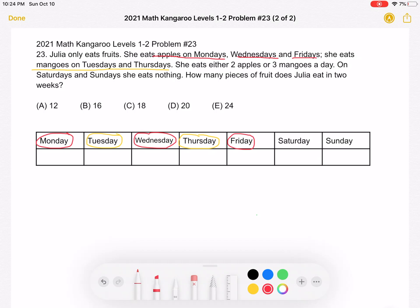Now we're told that she eats either two apples. So if it's an apple day, she'll be eating two apples. So for each apple day, Monday is an apple day, so two apples. Wednesday is an apple day, two apples. And Friday is an apple day, two apples.